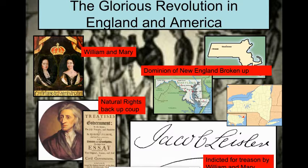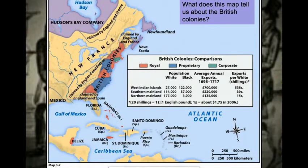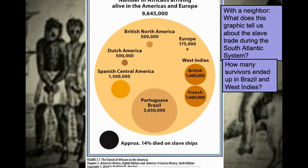Also during this time, the Enlightenment is happening, which is going to be a huge influence later when we get into the revolution. Looking at the data on Africans arriving in the Americas, Portugal and Brazil were moving most of the slaves during this time, whereas Dutch America was still small and British North America was very small.